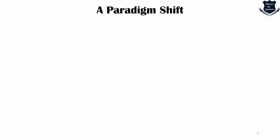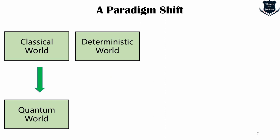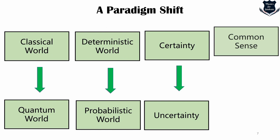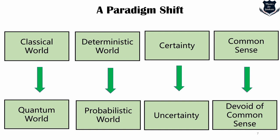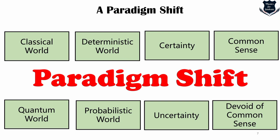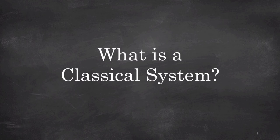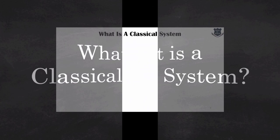Moving from classical to quantum: we go from a deterministic to a probabilistic world, from certainty to uncertainty, from common sense to something weird and bizarre. This is what we call a paradigm shift — shifting from a mental framework of certainty to something very uncertain. Before going further, I want to define what a classical system is — not in terms of logic or calculus, but something very philosophical and deep-rooted in physics.